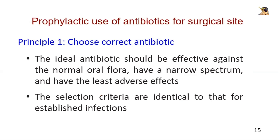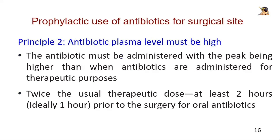Once a patient is deemed an appropriate candidate for pre-operative antibiotics, the appropriate medication must be chosen. The ideal antibiotic should be effective against the normal flora, have a narrow spectrum, and have the least adverse effects. Therefore, the selection criteria are similar to those for established infections. In addition, the antibiotic must be administered so that the peak plasma concentration is at its highest during the surgical procedure, with the peak being higher than when antibiotics are administered for therapeutic purposes — this usually equates to roughly twice the usual therapeutic dose, administered at least two hours and preferably one hour before the surgical procedure.